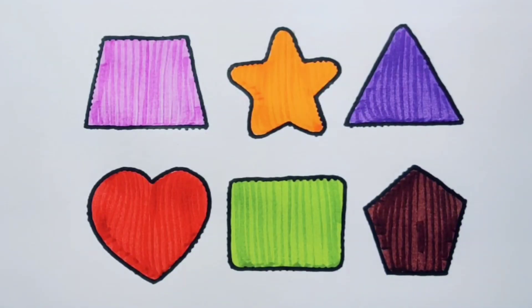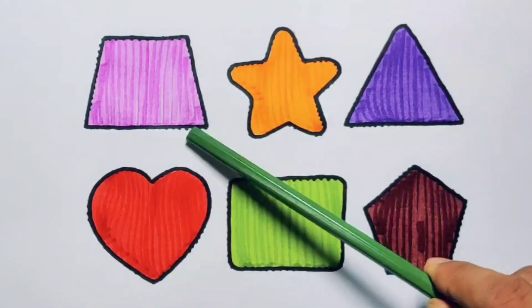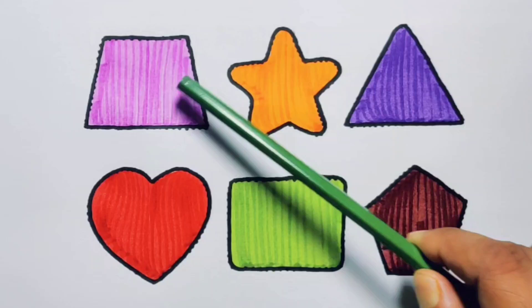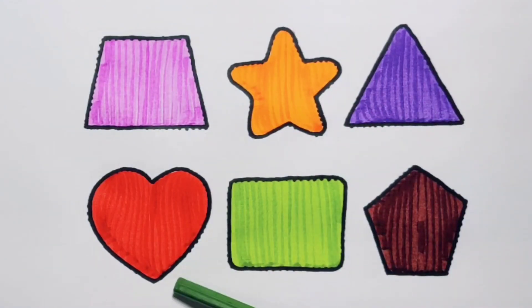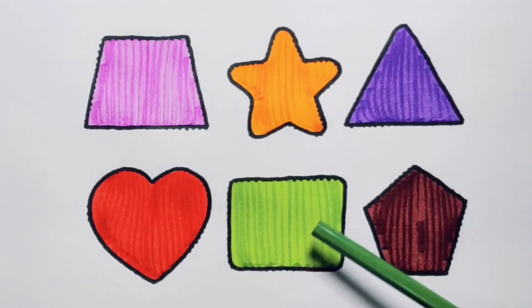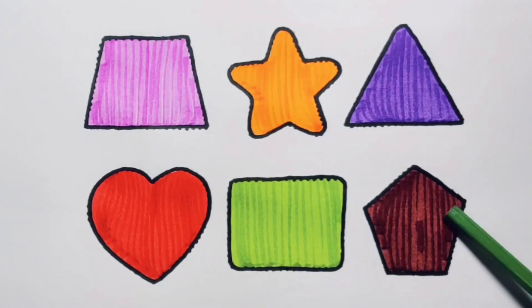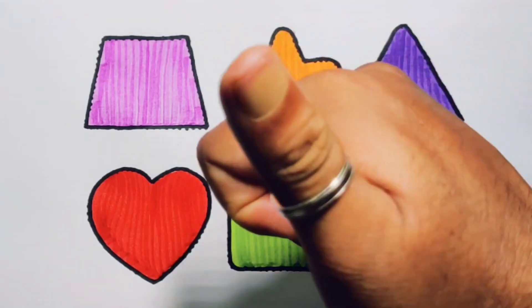What we learned: we learned pink color trapezium, orange color star, purple color triangle, red color heart, green color rectangle, chocolate color pentagon. Thank you for watching my video.